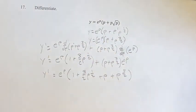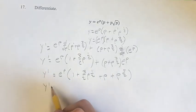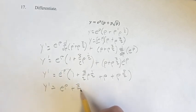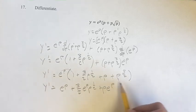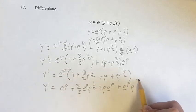And there are no like terms in here, so the only thing we can do is just distribute the e to the p and multiply it by all of these individual terms. And this is going to be your derivative.